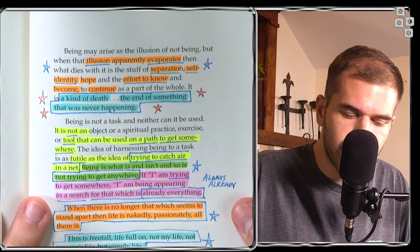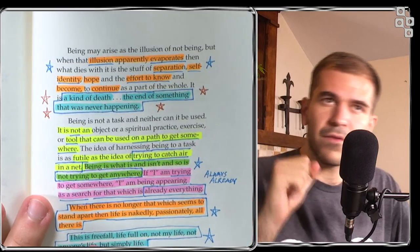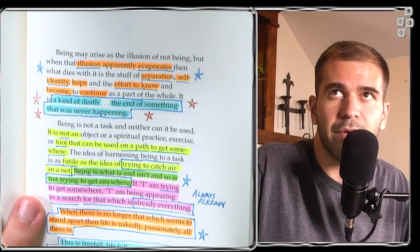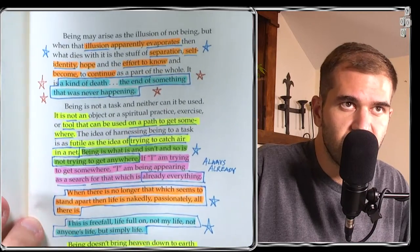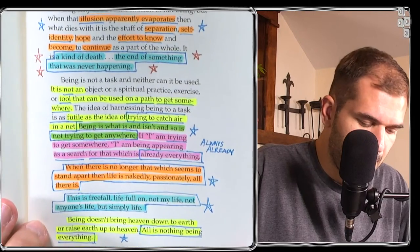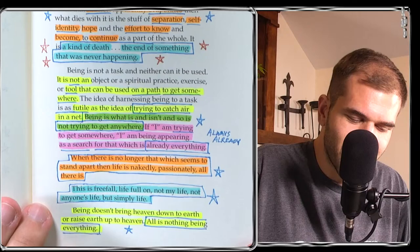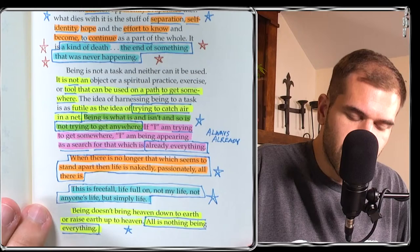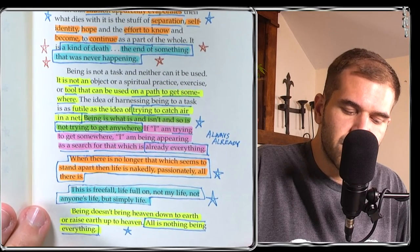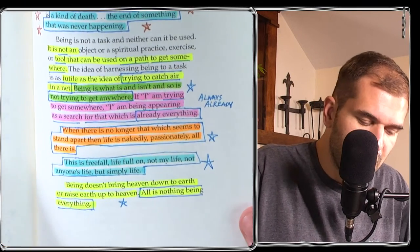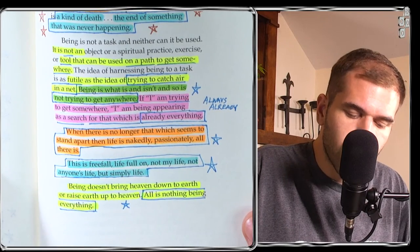Illusion apparently evaporates. Separation, self-identity, hope, effort to know, become, continue. Is a kind of death. The end of something that was never happening. Separation was never happening and then there is the apparent separation that dissolves, that decontracts into oneness recognizing itself as oneness. Being. Trying to catch air in a net. Being on a path to try and get somewhere. Being is what is and isn't and so is not trying to get anywhere. Already everything. Always already. When there is no longer that which seems to stand apart, then life is nakedly, passionately, all there is. This is free fall, life full on. Not my life. Not anyone's life. But simply life. All is nothing being everything.